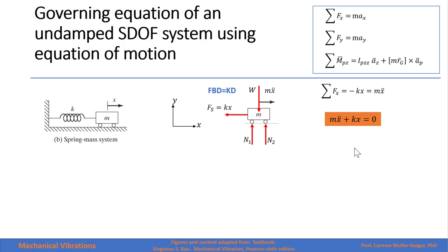This equation has a term describing the inertia of the system multiplying the acceleration of the mass, and a spring term describing the elasticity of the system multiplying the displacement of the mass. Since we are talking about free vibration, this equation is equal to zero. It will not be equal to zero when an external force is applied.